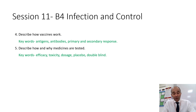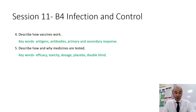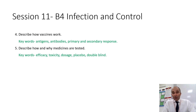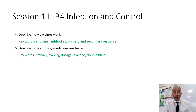And then finally, describe how and why medicines are tested. Your key words are: efficacy, toxicity, dosage, placebo, and double blind. You might want to draw your clinical trial out as a flow diagram, as it's a good way to describe how medicines are tested.